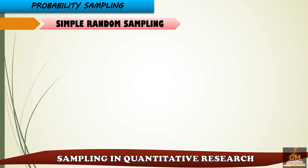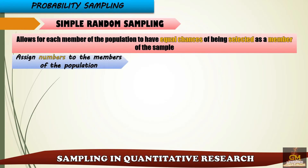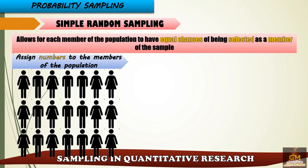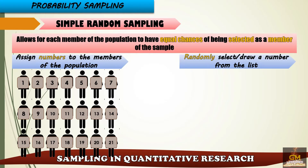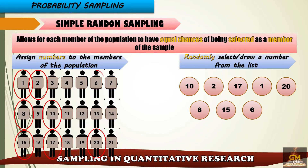We're going to talk about the different probability sampling techniques, starting with simple random sampling. Simple random sampling allows each member of the population to have equal chances of being selected. It involves two steps: first, assign numbers to the members of the population; then randomly select or draw a number from the list. Since this is random selection, there is no sequence or pattern as to who would be selected. Whoever is selected will become part of the representative sample for the study.